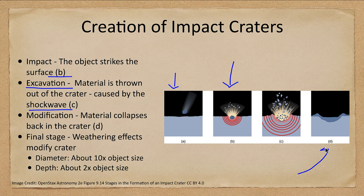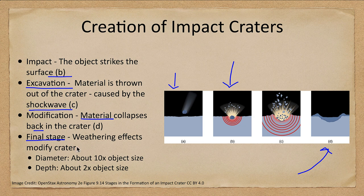In D, we see what happens afterwards. Long after the crater has formed, material begins to collapse back into the crater, so eventually there will be less of a crater than there originally was. A nice sharp crater is relatively recent. The final stage, not pictured here, is modification of the crater — weathering effects will slowly wear it down. On Earth that could be wind or water; on the moon that would be things like micrometeorite impacts that cause slow erosion of the crater.